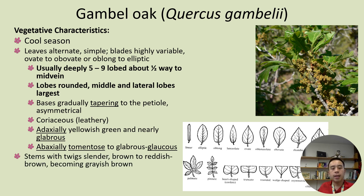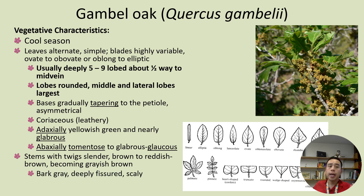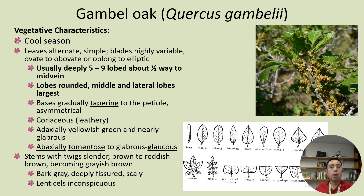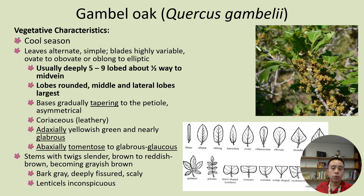Stems typically have slender twigs that are brown to reddish-brown and can become grayish-brown with age. The bark is often gray and deeply fissured — you can see cracks on the branches and stems — and is oftentimes scaly in appearance. The lenticels, which are like stomata on stems, are inconspicuous and too small to see with the naked eye. That small offshoot visible in the image is likely new growth or possibly galls.